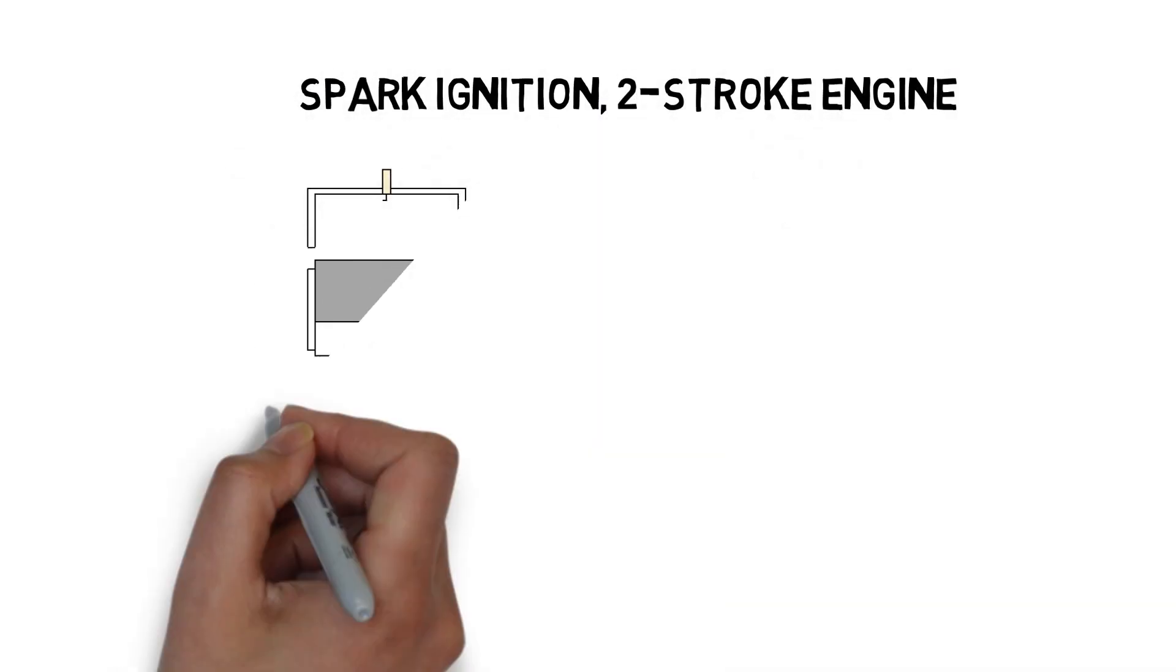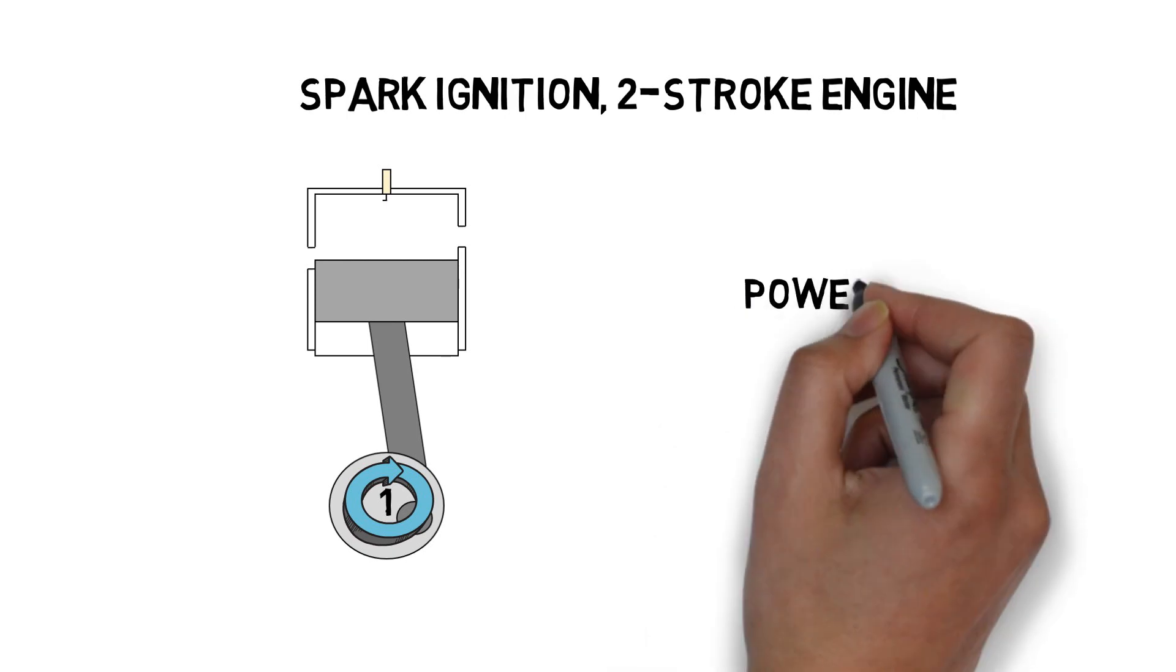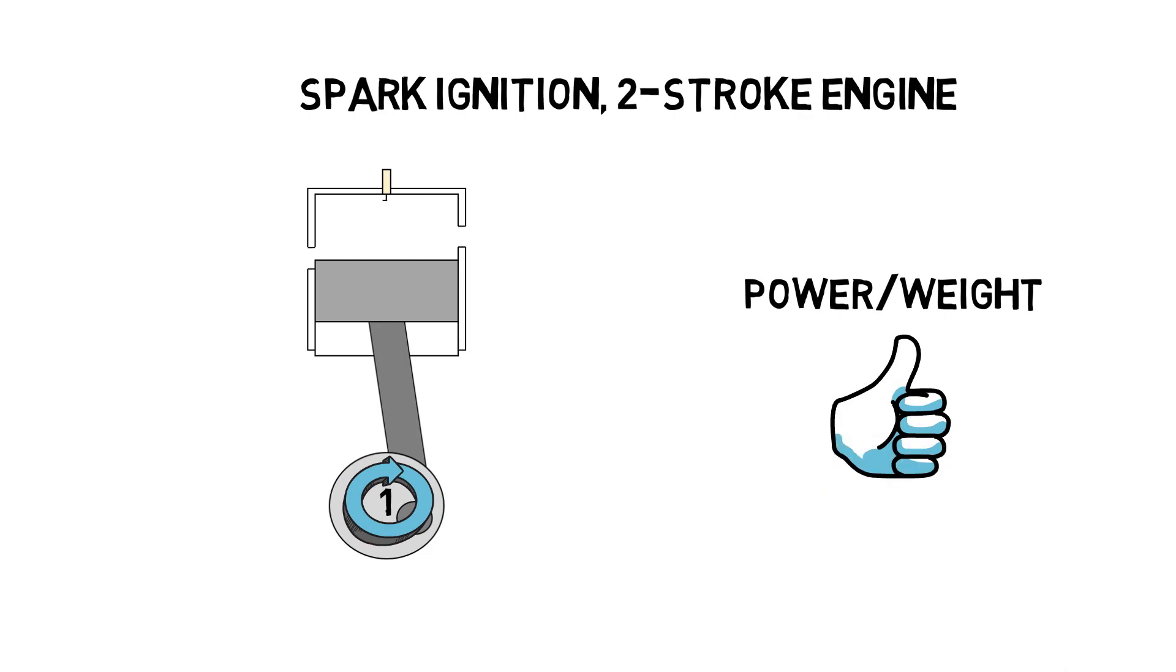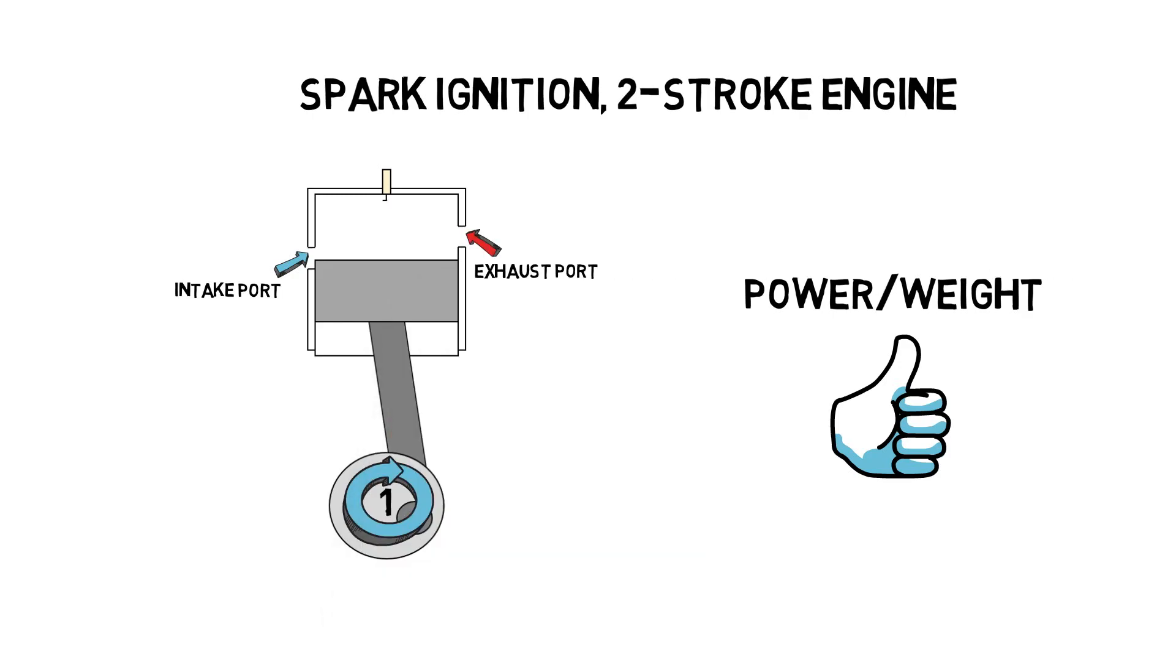Two-stroke engines differ in that they only require one crankshaft revolution, or two strokes, hence the name, for a complete cycle, and therefore produce one power stroke per rotation. They are ideal for small applications where power-to-weight ratio is important. Ports in the cylinder walls that serve as the inlet and outlet are opened and closed by the moving piston.